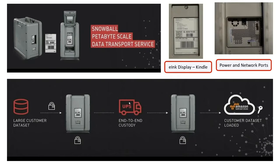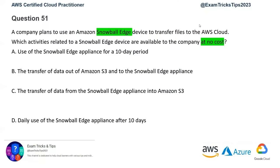It's a very effective service that AWS provides if you have to move on-premises data into cloud. So let's go back to our question and highlight the keywords. The key topic is Snowball Edge, and what we need to identify is what you get at no cost. The first option is: use of Snowball Edge appliance for a 10-day period. The appliance is not free — it's a paid service.